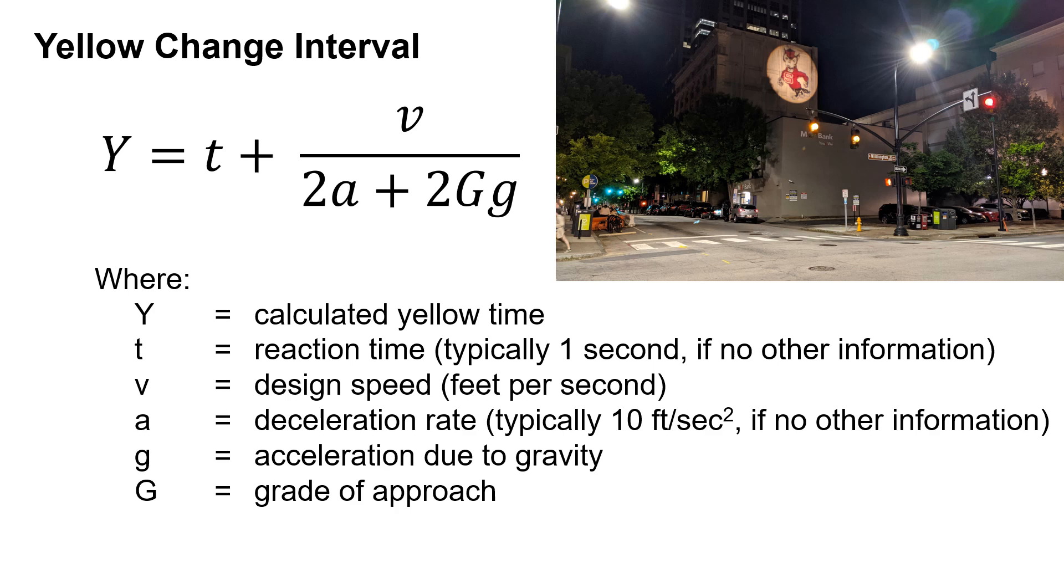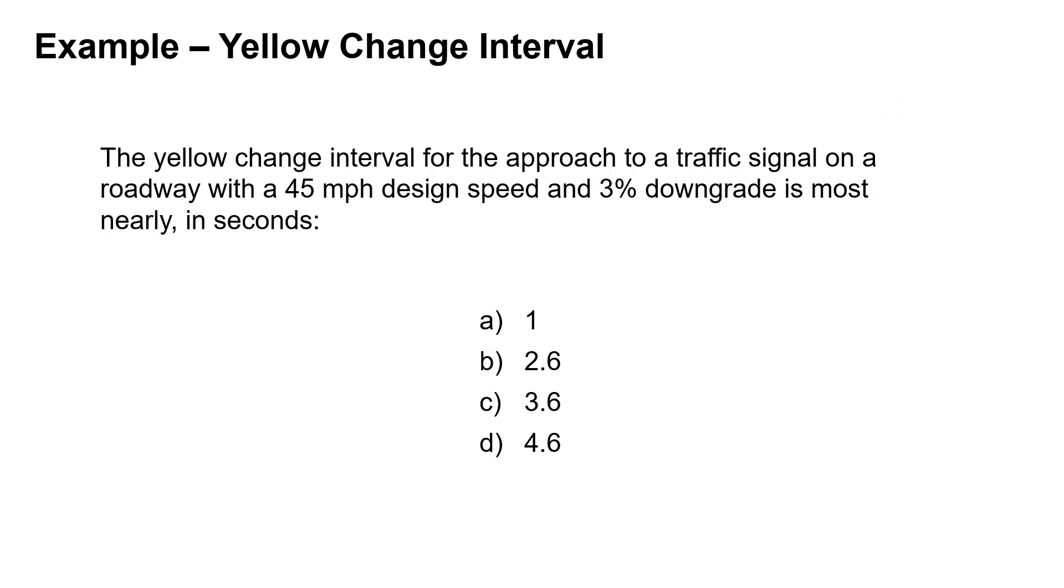Looking at an example, we're asked to find the yellow change interval for the approach to a traffic signal on a roadway with a 45 mile per hour design speed and a 3% downgrade.